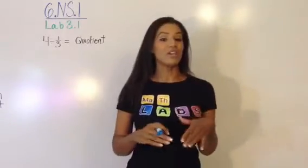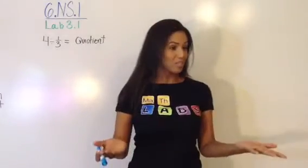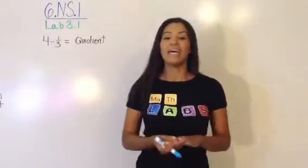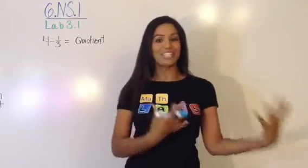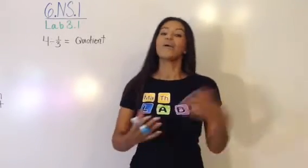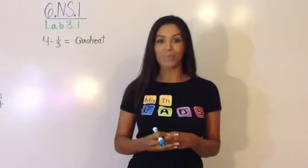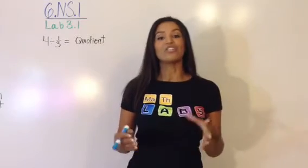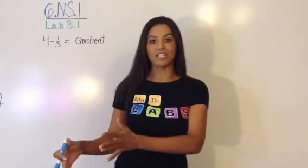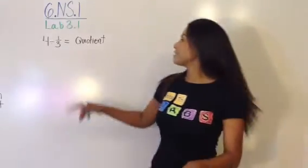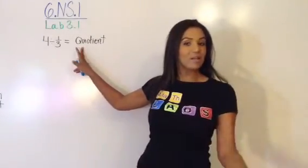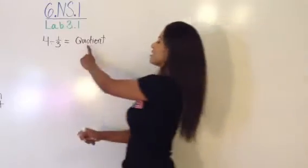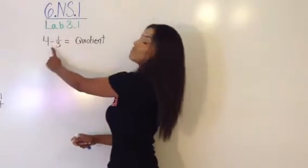Everyone should have their lab book open to section 3.1 and we're going to read the objective together. I'll read it aloud, you read it in your head. I can use a visual model or picture to find the quotient involving a whole number and a unit fraction. And quotient, if you don't know or forgot from 5th grade, is the answer when you divide.